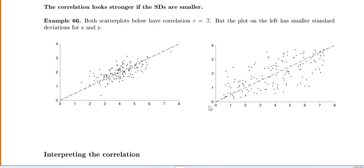As I note, the correlation will look stronger if your standard deviations are smaller. Just because if your standard deviations are smaller your points are less spread out so it looks like they're closer to the line.